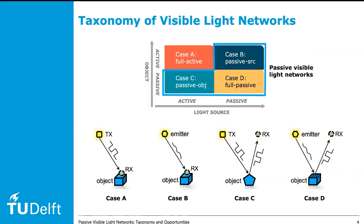In this work, we propose a taxonomy that classifies all the efforts related to visible light into four cases: Case A with active light source and active object; Case B with passive light source and active object; Case C with active light source and passive object; and Case D with passive light source and passive object. This taxonomy allows us to identify the main challenges and research opportunities of different applications that explore visible light for passive sensing and communication.